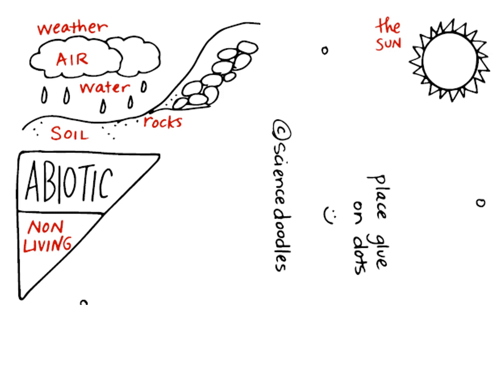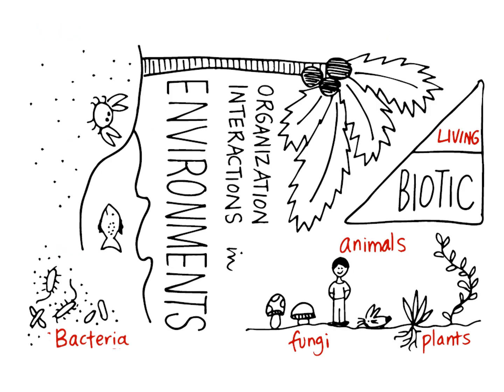Biotic things are things that are living. It's kind of like sexual and asexual reproduction — when we put the 'a' in front of something, it means the opposite. So biotic — 'bio' means life — and abiotic means not living.